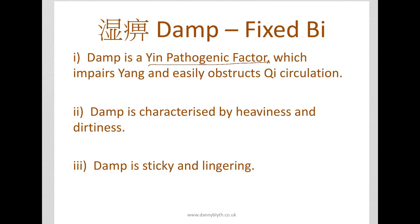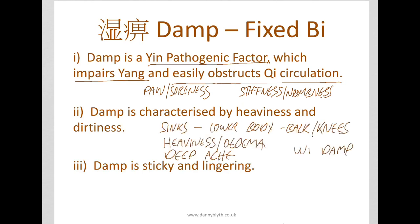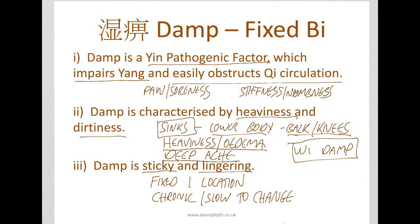Damp is a yin pathogenic factor so it tends to be slow to develop and more stubborn. It impairs yang and obstructs the qi. We get pain and soreness, achy pain, stiffness, and numbness. Rather than cold, which completely stops and restricts movement, damp would just feel stiff and achy. It is characterised by heaviness — it tends to sink and affect the lower body, the back, the knees, and the ankles. You get feelings of heaviness and oedema, fluid building up, a deep ache, and it's worse in damp weather. It's sticky and lingering — fixed in one location, chronic and slow to change. Again, like osteoarthritis of a knee joint.